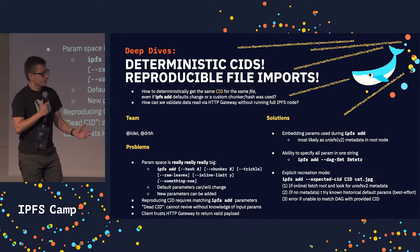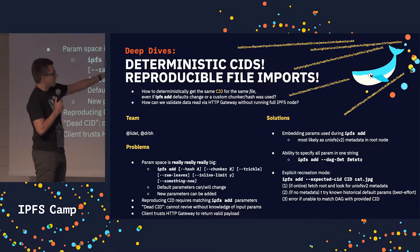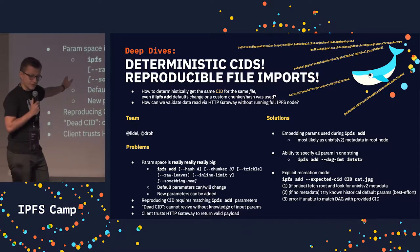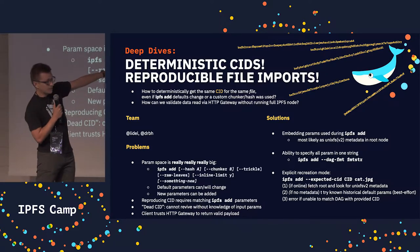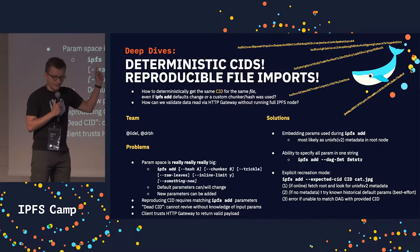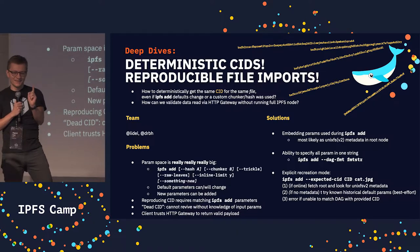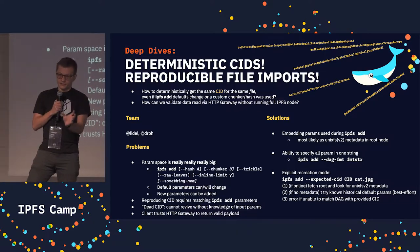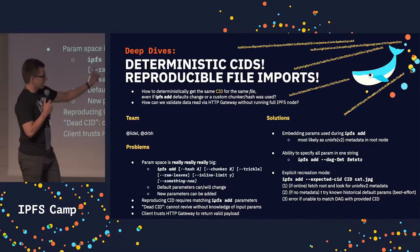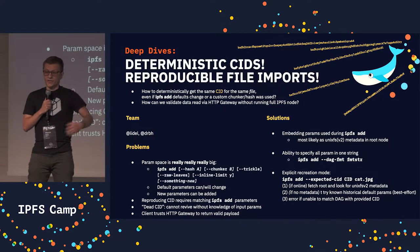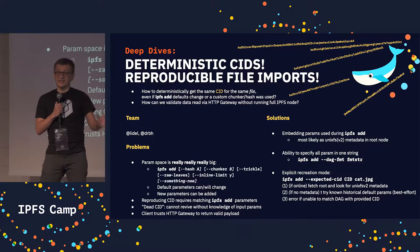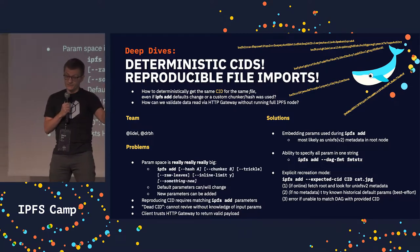The idea is to either automatically store the parameter space used during IPFS add in UnixFS v2 — there will be a next update on that — or make it easier for people to specify the DAG parameter space using a simple string format. The third option is when I want to re-add content and expect a specific CID.